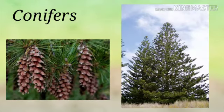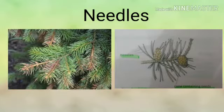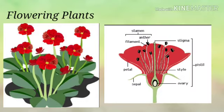Conifers: most conifers grow into large trees. They usually have tough, narrow leaves called needles. They don't have proper flowers, and they reproduce using seeds. Flowering plants reproduce using seeds that are produced inside flowers.